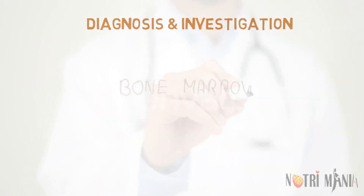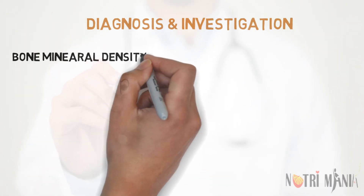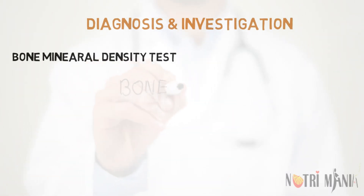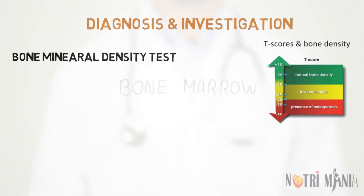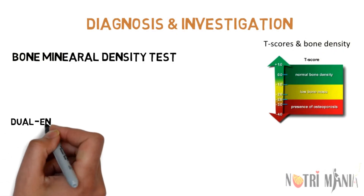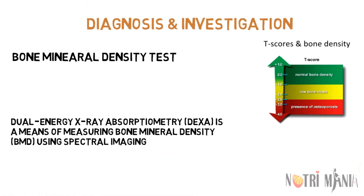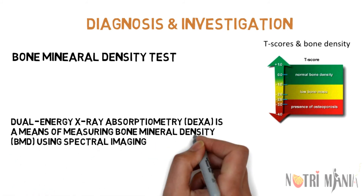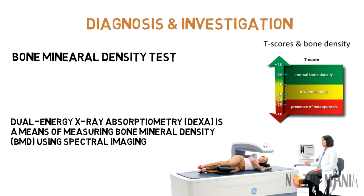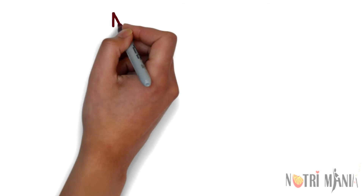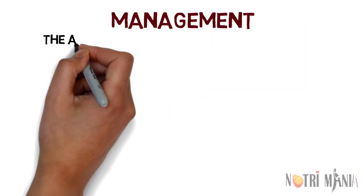How can you know if you have osteoporosis before your bones break? There are several ways to measure your bone health. A bone mineral density test, sometimes called a bone density test, examines segments of your bone through X-rays to detect osteoporosis. One of the most common tests is dual X-ray absorptiometry, also called DEXA, which measures bone density of the spine, hip, or total body.